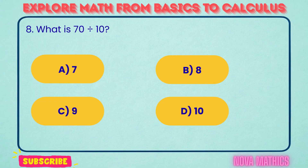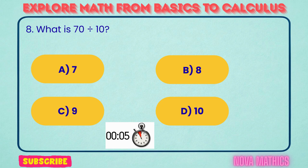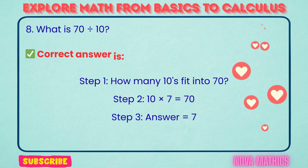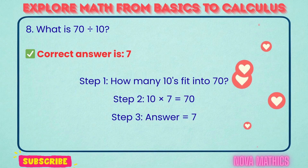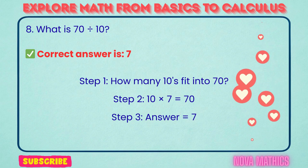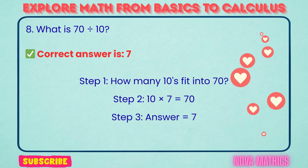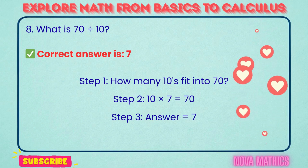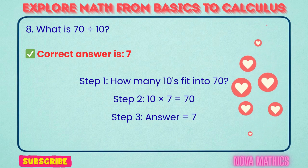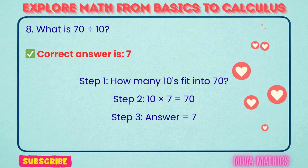8. What is 70 divided by 10? Correct answer is 7. 70 divided by 10 equals 7. We find this because 10 times 7 is 70.